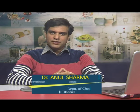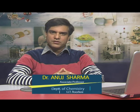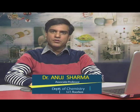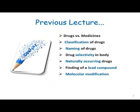Hello and welcome to the second lecture in the ongoing series of lectures on chemistry in everyday life. In the last lecture we studied about preliminary information on drugs, we discussed differences between a drug and a medicine, we also discussed classification of drugs and how drugs are named, and then we moved on to how a drug can be selective in its efficacy in a body. We discussed certain naturally occurring drugs, found out how to get the lead compound and what is done on a lead compound through molecular modifications.